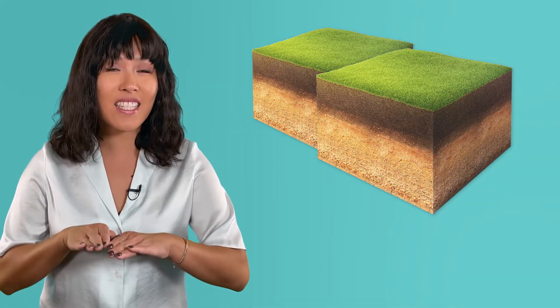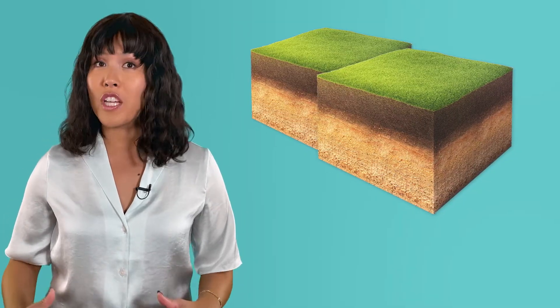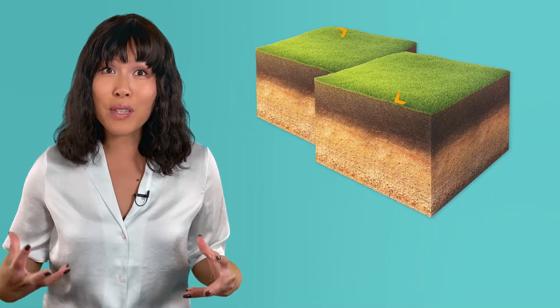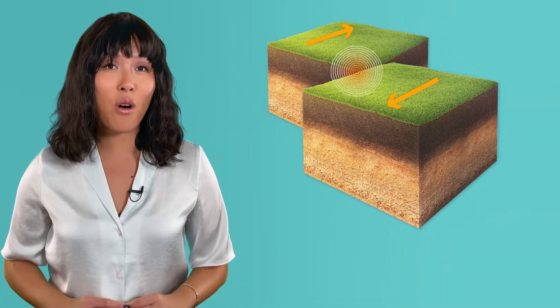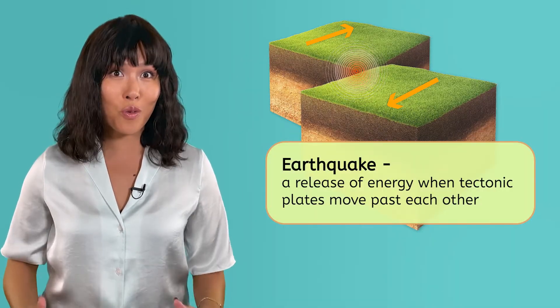Tectonic plates are essentially massive slabs of rock with rough and jagged edges. When they move, they get stuck along these edges, but they keep exerting force on each other. Over time, this force builds up until it's strong enough to break the plates free and release all that built-up energy at the same time. We call this release of energy an earthquake.